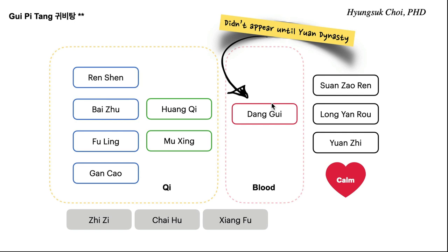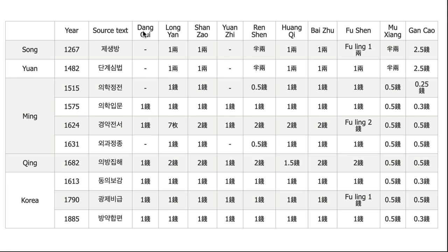Modern-day Chinese medicine classifies this formula as one that tonifies both qi and blood. But at first it was a formula that only tonifies qi. Why did Ming dynasty doctors add danggui? Because patients had already lost blood and presented with pale complexion and anemia. So besides treating the root problem of qi deficiency, they also needed to treat the branch problem — blood deficiency from blood loss.